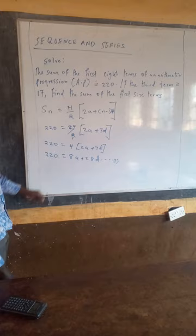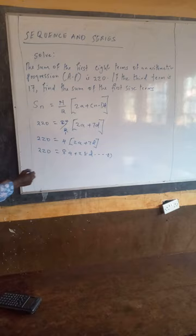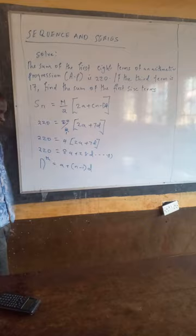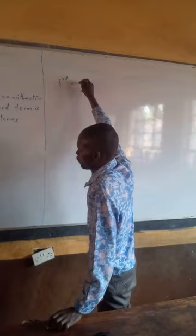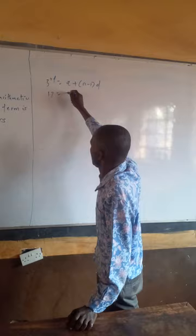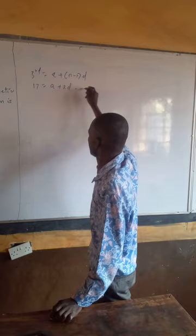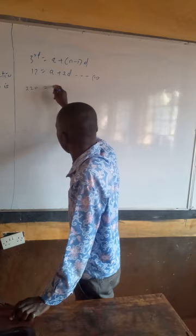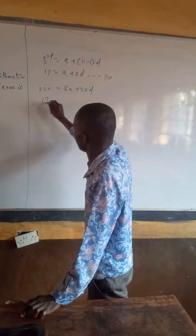We shall go to the second one. If the third term is 17, find the sum of the first six terms. The N-th term is given by A plus N minus 1 times D, where D is the common difference. For the third term, N equals 3, so the third term equals A plus 3 minus 1 times D, giving us 17 equals A plus 2D. This becomes our equation 2.